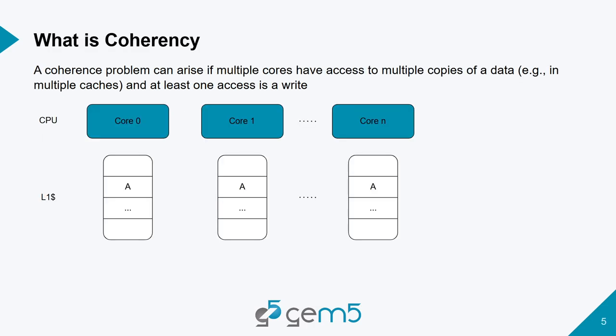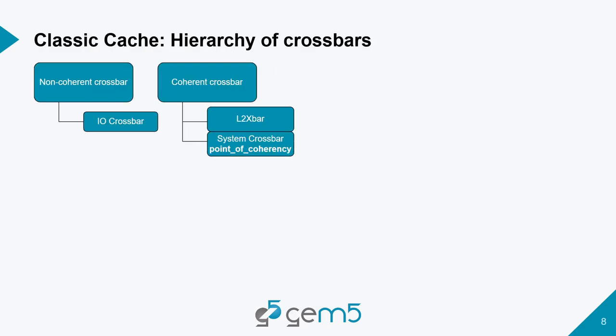Quick reminder on cache coherence: you have a bunch of cores, each with private caches, potentially sharing a memory block. We implement what is called the single-writer multiple-reader invariant — multiple cores can read the same block simultaneously, but if one core writes, we need to invalidate all the other copies from their caches to prevent stale data reads.